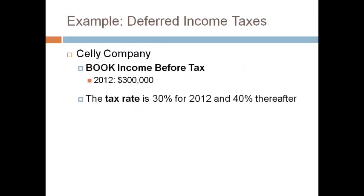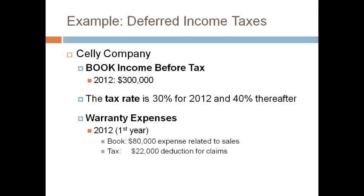Let's walk through an example together. Selly Company has income before tax on the income statement of $300,000. The tax rate is 30% for 2012 and 40% for all years after 2012. 2012 is the first year the company has offered warranties. Warranties are estimated and expensed for books in the period of the related sale. A tax deduction is taken when a customer claims the warranty in future years. A lower tax expense for tax means that in 2012 the taxable income was higher and the tax payable was higher. This means that in future years the tax payable will be lower and less tax will be paid in the future, which is an asset.